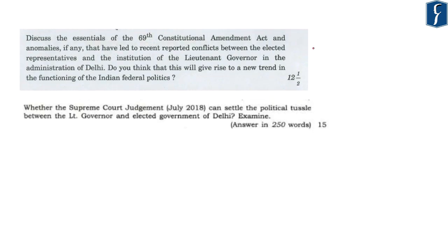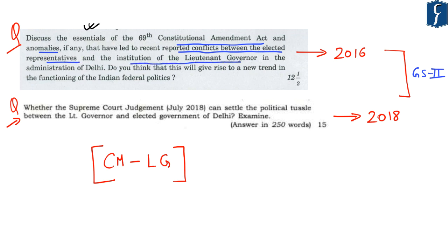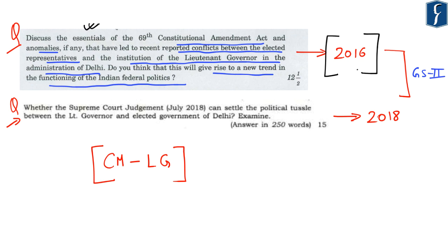From the prelims perspective this topic is covered under Indian polity and governance, and from the mains perspective under GS Paper 2. You can see two direct questions were asked in 2016 and 2018 in GS Paper 2 on the controversy between the CM and the Lieutenant Governor of Delhi. The 2016 question asked to discuss the essentials of the 69th Constitutional Amendment Act and anomalies that led to reported conflicts between elected representatives and the institution of Lieutenant Governor in the administration of Delhi.